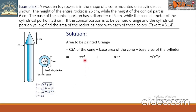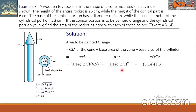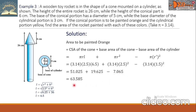Substituting: 3.14 × 2.5 × 6.5 plus 3.14 × 2.5² minus 3.14 × 1.5². Simplifying: 51.025 plus 19.625 minus 7.065, giving a total orange area of 63.585 square centimeters.